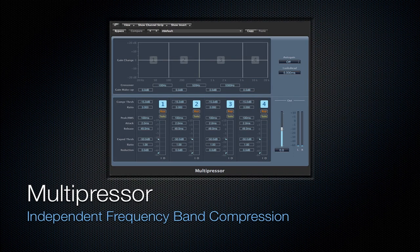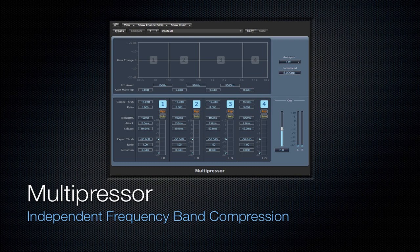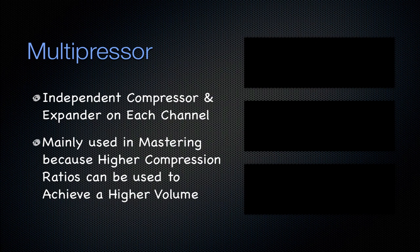Next is going to be the multi-pressor — it's independent frequency band compression. On each channel you're going to have a compressor across four bands. Not only do you have compression, but you have an expander on each of these channels. So if you hear more buzz in one band than the others, you can set a larger threshold on your expander to get rid of that hum without manipulating the other channels. It's mainly used in mastering because of the high compression ratios — you can achieve a higher volume when you have a limiter after it. This is the basic definition of a master multi-pressor followed by a limiter.